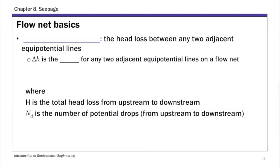The next definition is potential drops. A potential drop is the head difference or head loss between any two adjacent equal potential lines, called delta h. Delta h is the same for any two adjacent equal potential lines on a given flow net. We can calculate delta h as the total head loss capital H divided by the number of potential drops Nd. Nd is the total number of potential drops from upstream to downstream.